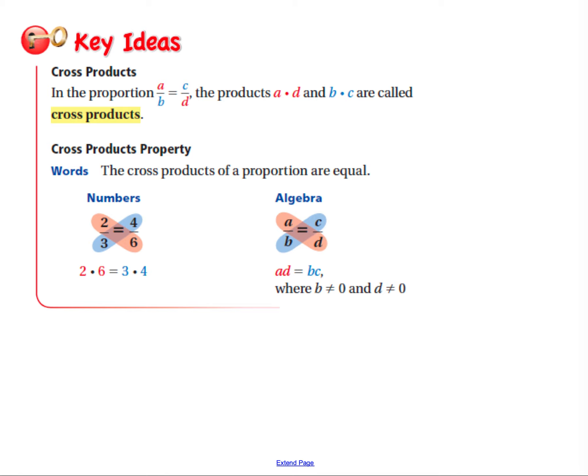Cross products: in the proportion a is to b as c is to d, the products a times d and b times c are called cross products — they're on the diagonals from each other. Cross products of a proportion are always equal. For example, 2 thirds and 4 sixths are equivalent fractions. 2 times 6 is 12, and 3 times 4 is 12. Equal cross products confirm it's a proportion.